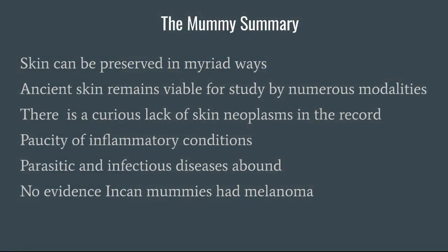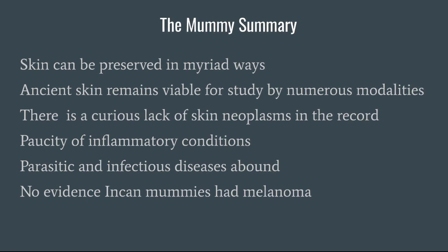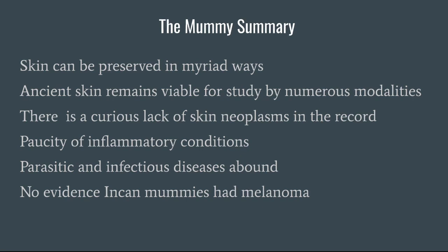So now we're going to take a look at our mummy summary. First of all, skin can be preserved in a myriad of different ways, and structures that are keratin-based or collagen-based tend to be quite remarkably well preserved. Ancient skin remains viable for study today by numerous modalities. There happens to be a real lack of skin neoplasms found in the record, but hopefully this is just from having such a small sample size. As I said earlier, it's estimated that in Egypt alone there may be up to 70 million more mummies, and one time scientists didn't believe Egyptians tattooed themselves — now we know that's not the case — so they may find a tremendous amount of epithelial neoplasms going forward.